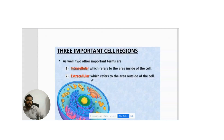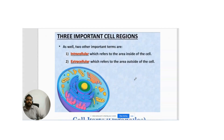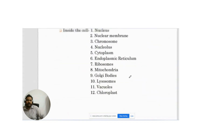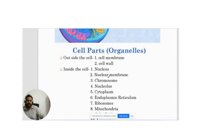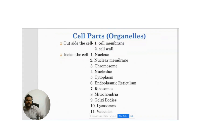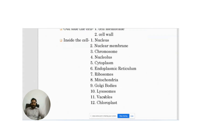Intracellular refers to the area inside the cell, and extracellular represents the area outside the cell. The list of cell components includes: outside the cell — the cell membrane; and inside the cell — nucleus, nuclear membrane, chromosomes, nucleolus, cytoplasm, endoplasmic reticulum, ribosomes, mitochondria, Golgi apparatus, lysosomes, vesicles, and chloroplast. Chloroplast is found only in plant cells and is not part of animal cells.